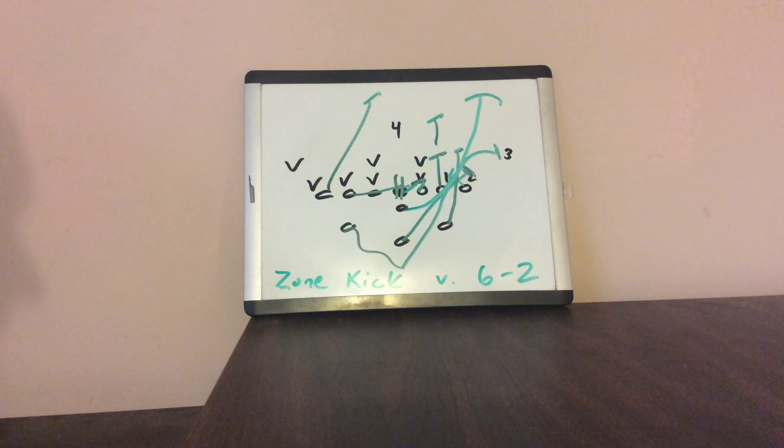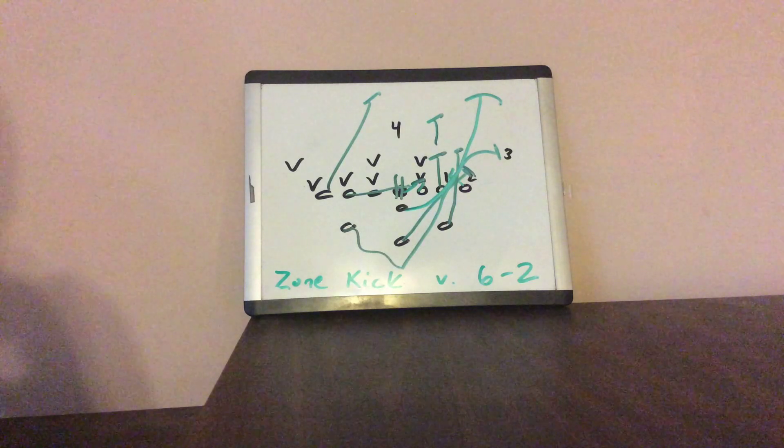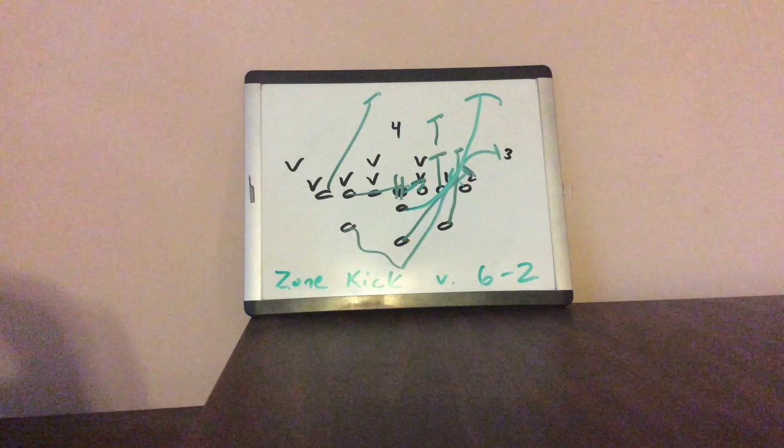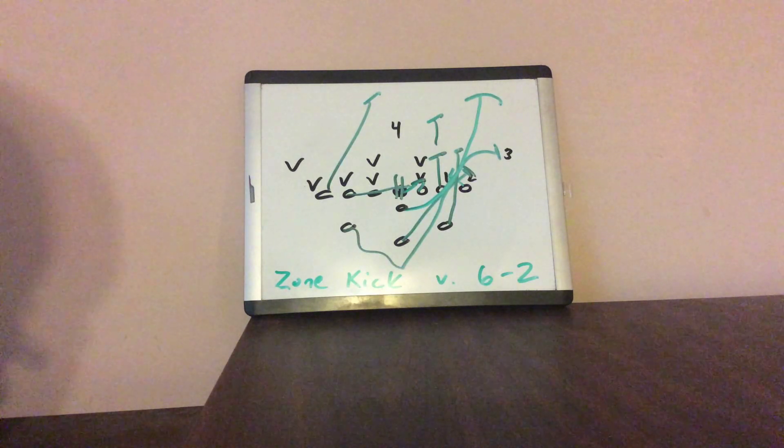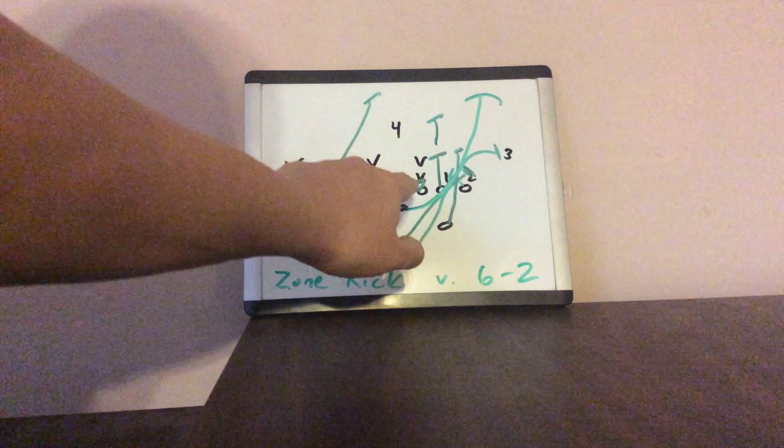The zone kick is being utilized just as much as the zone option by Army and Navy, especially Army. Army is running this quite a bit. The kick is also known as quarterback power. What this does is the offensive line is going to block it the same as triple option. So what happens here is the center and guard are going